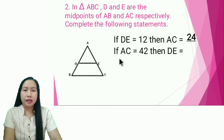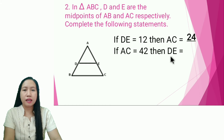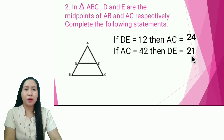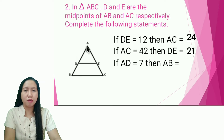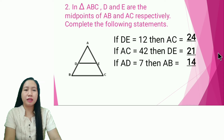Next: if line segment AC is equal to 42, then what is the measure of line segment DE? The answer is — and AC is used to find DE. Then what is the measure of line segment AB? The answer is — very good — 14.